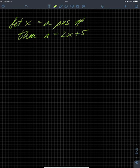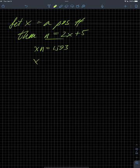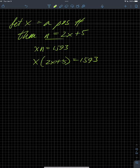Then the product of these two — so x times n is equal to 1593. Let me go double check if I read that correctly, because I was doing many things at once. One positive number is five more than twice another — okay.